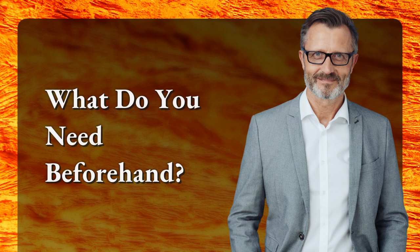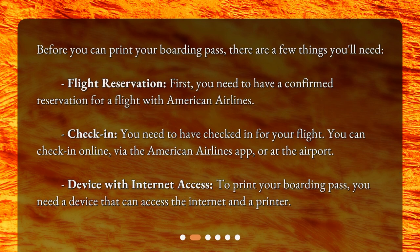What do you need beforehand? Before you can print your boarding pass, there are a few things you'll need. First, you need to have a confirmed reservation for a flight with American Airlines. You also need to have checked in for your flight — you can check in online, via the American Airlines app, or at the airport. You'll also need a device that can access the internet and a printer.